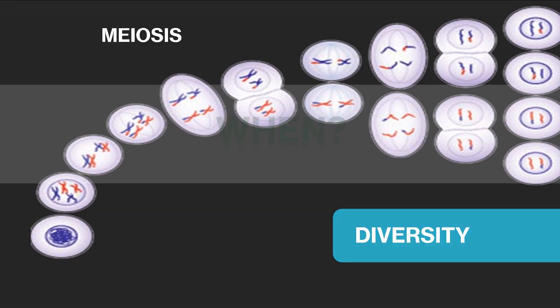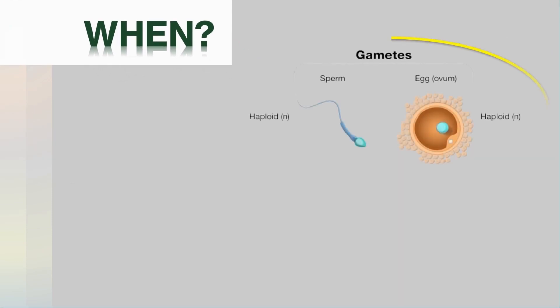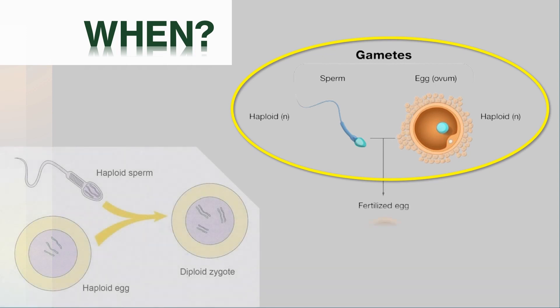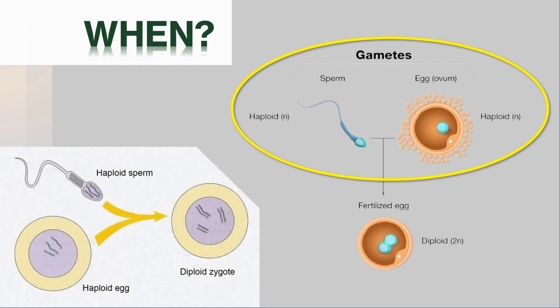When does meiosis happen? It kicks in during the production of gametes — that's science speak for egg and sperm cells. In humans and other animals, it's a key part of sexual reproduction. In plants, fungi, and some protists, meiosis is also crucial, but might happen at different life cycle stages.